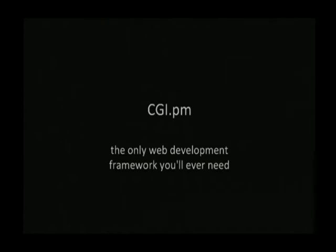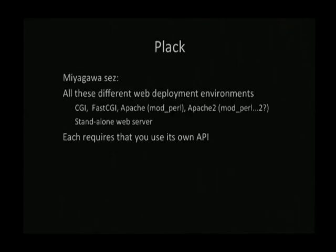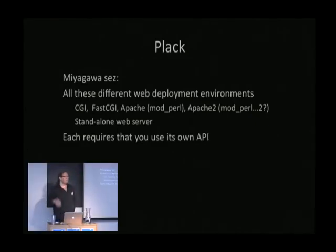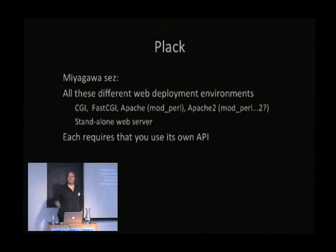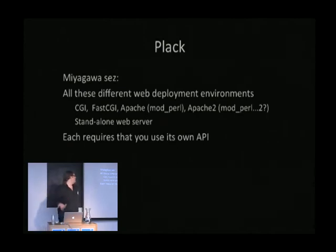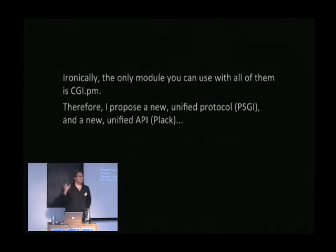This was originally intended as counter-programming for Sawyer's 'CGI.pm Must Die', which includes a lot of profanity. Miyagawa, in his presentation about Platt, says: look, there's all these different web deployment environments where we need to run code — like Apache, CGI, FCGI, standalone web servers — and each one has its own totally different API. And ironically, the only module you can use which has the same API in all these environments is CGI.pm.